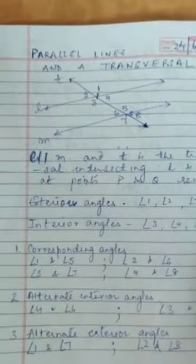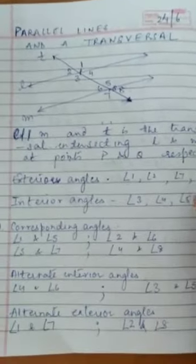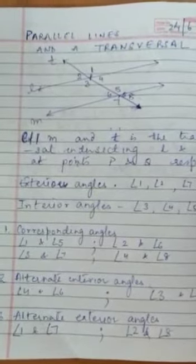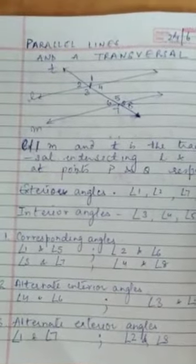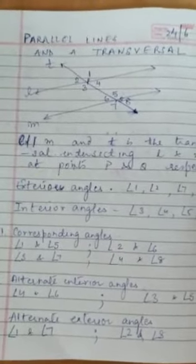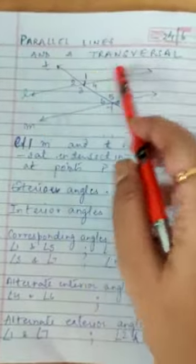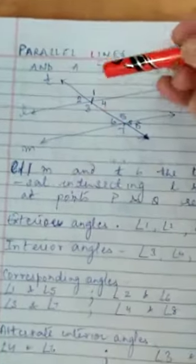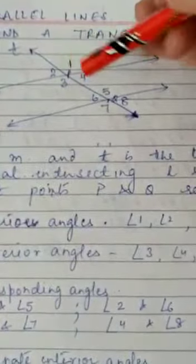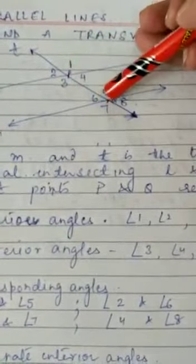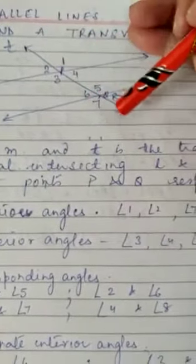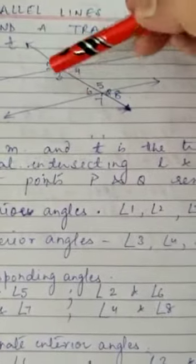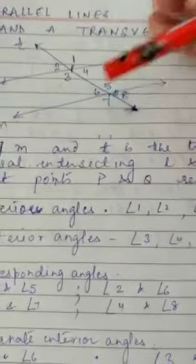You have already studied corresponding angles, interior angles, alternate interior angles, and alternate exterior angles. We revise them in short. If L and M are two parallel lines and T is a transversal, then the corresponding angles are: angle 1 corresponds to angle 5, angle 4 corresponds to angle 8, angle 2 corresponds to angle 6, and angle 3 corresponds to angle 7.